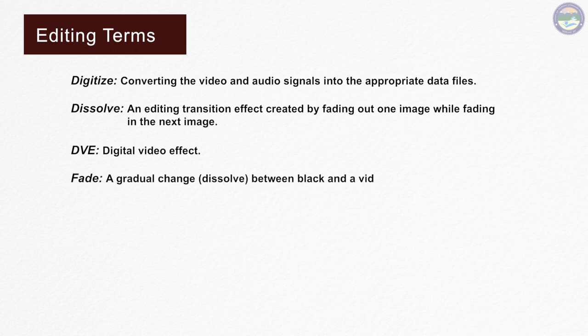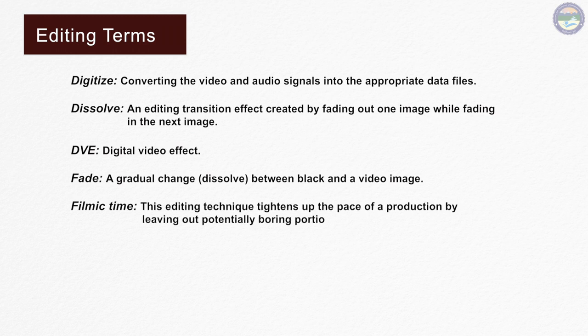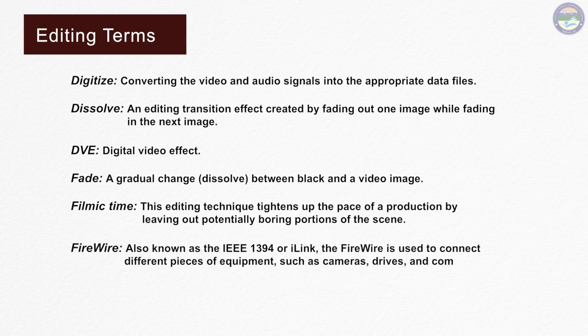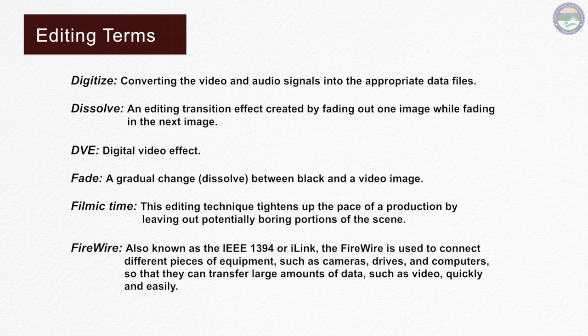Fade is a gradual change between black and a video image. Filmic time is an editing technique that tightens up the pace of a production by leaving out potentially boring portions of the scene. Firewire, also known as IEEE 1394 or I-Link, is used to connect different pieces of equipment such as cameras, drives and computers so that they can transfer large amounts of data such as video quickly and easily.